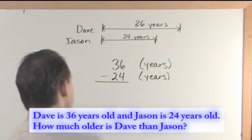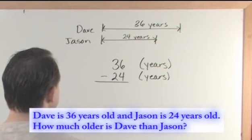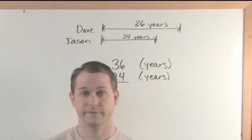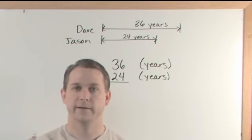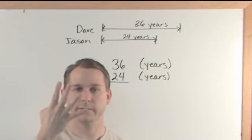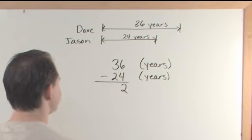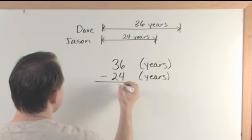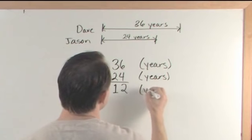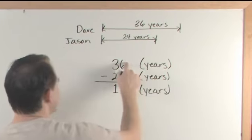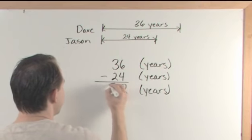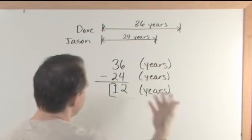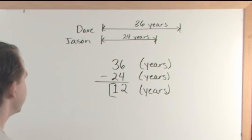How much older? How much younger? How much bigger? How much taller? These all mean subtraction. So we do 36 years minus 24 years. Starting in the right-hand column, 6 minus 4 is 2. Then 3 minus 2 is 1. That gives us 12 years. Dave is 12 years older than Jason — you have to subtract them to find the answer.